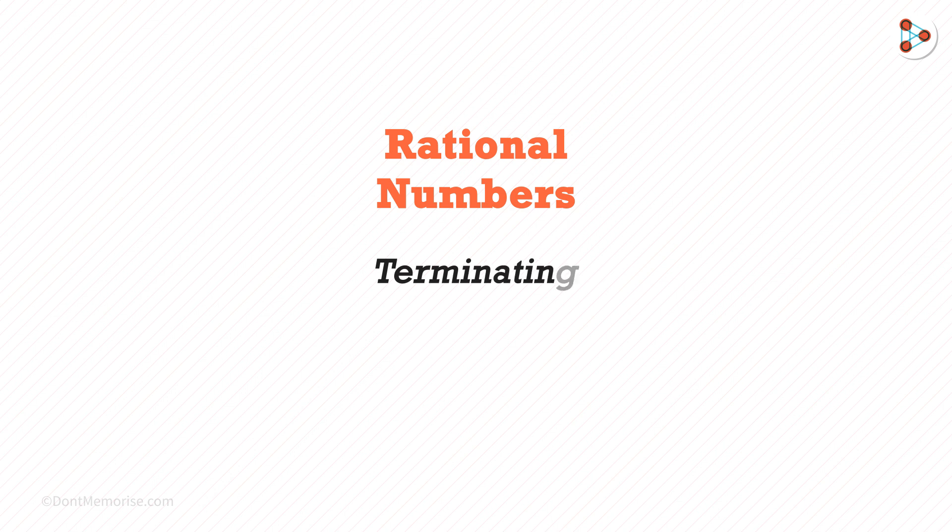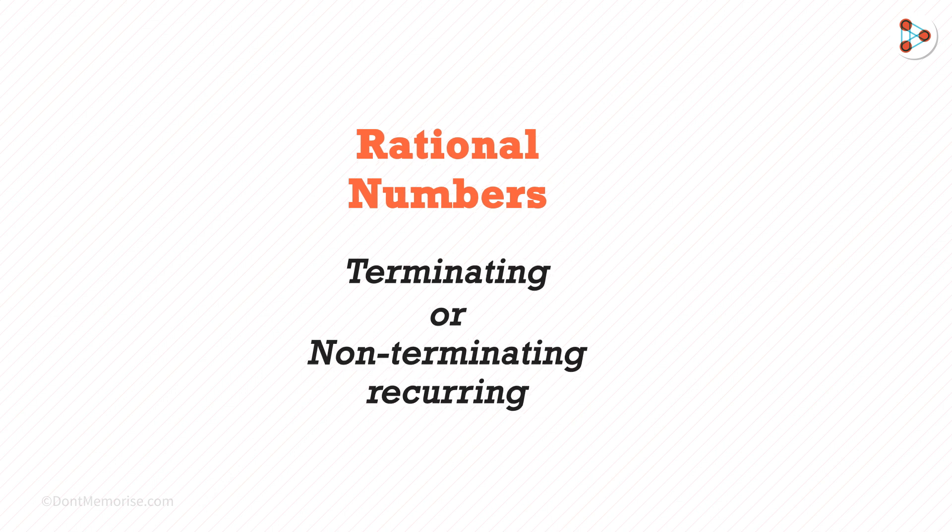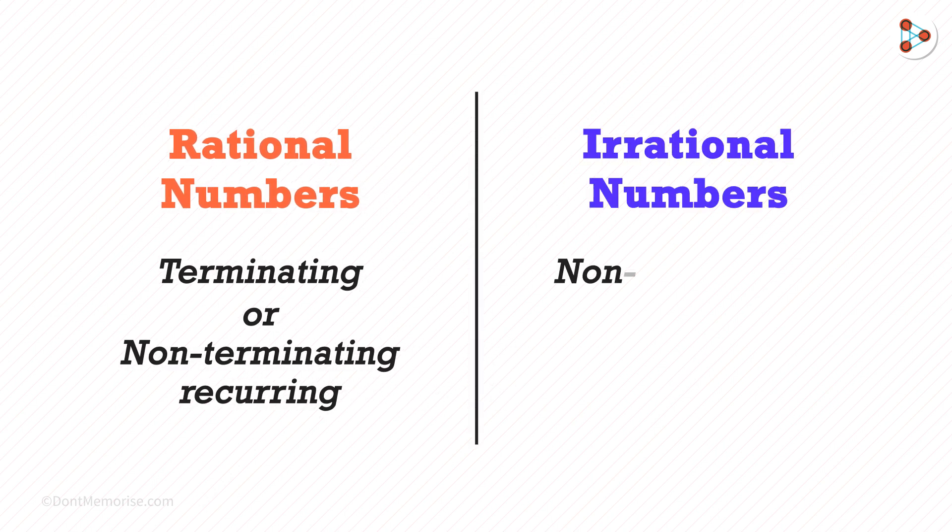Rational numbers can either be terminating or non-terminating recurring. Irrational numbers are always non-terminating and non-recurring.